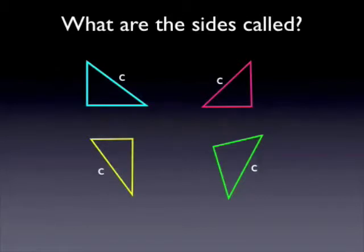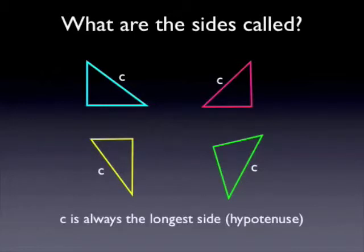Okay, so C is always the longest side. I wonder how you described it. Some people call it the diagonal. It's actually got a special name, the hypotenuse. But when we're referring to Pythagoras' theorem, we usually refer to it as C.